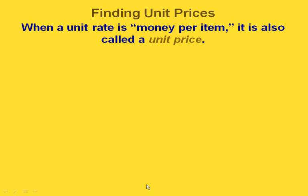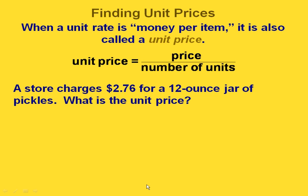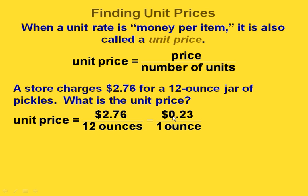We can also find unit prices. When our unit rate is a money amount per item, we call it a unit price. A unit price is the price divided by the number of units. For example, if a store charges $2.76 for a 12-ounce jar of pickles, we divide $2.76 by 12 to get 23 cents per ounce, or 23 hundredths of a dollar per ounce.